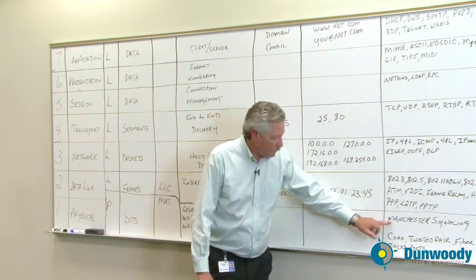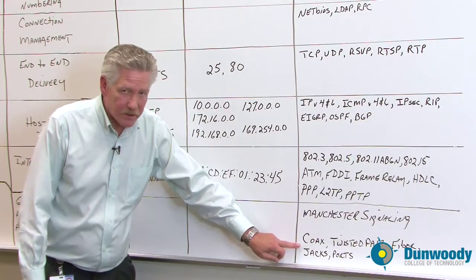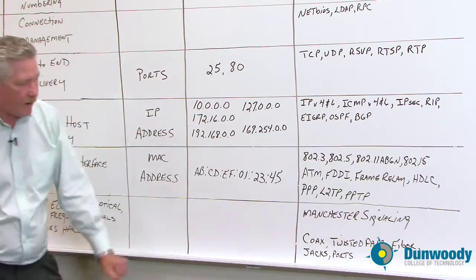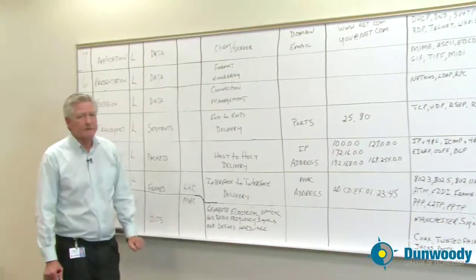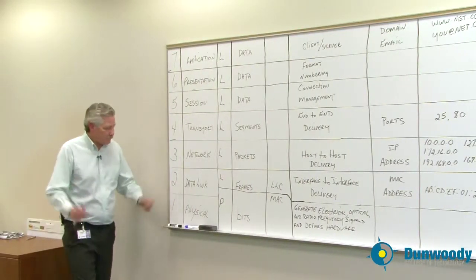Physical layer was Manchester signaling, and we also defined hardware at this layer, such as coax, twisted pair, fiber, jacks, ports, parallel, USB, what not.